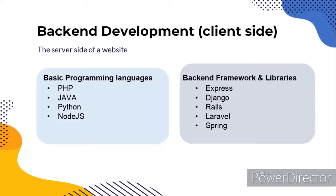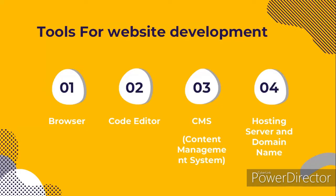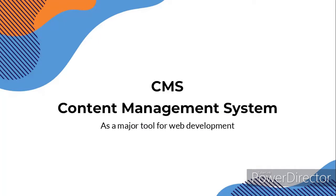Now let's talk about the tools that are used for web development. There are various tools used for web development. Some of these tools include the browser, which interprets and displays the code to users in a readable manner. Then we have the code editor, which is used by programmers to tell the computer what to do. We also have the CMS, the content management system, as well as the hosting server and the domain name. In this course, we will be talking about CMS as a major tool for web development.